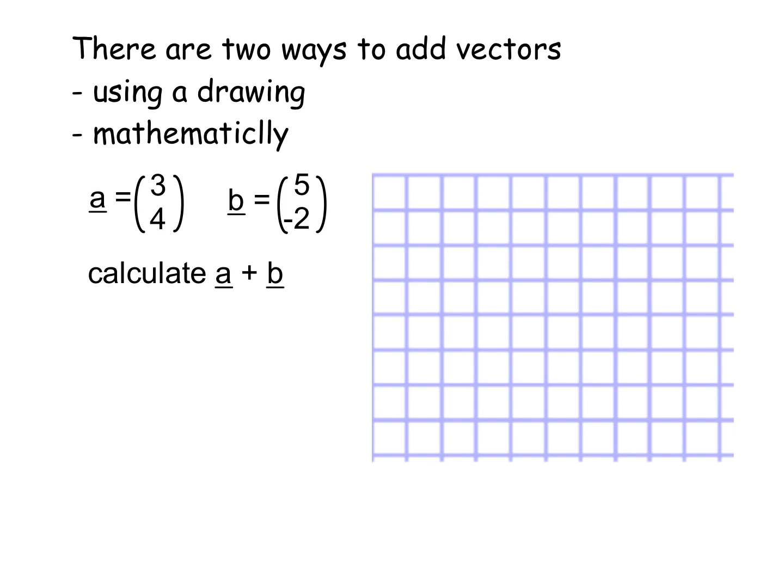So what we're going to do is, I'm going to just do it using adding first of all. It's actually really simple to add vectors. If you want to work out what A plus B is, it's literally writing out your two vectors with an add sign in between them and then you add the top rows and you add the bottom rows.